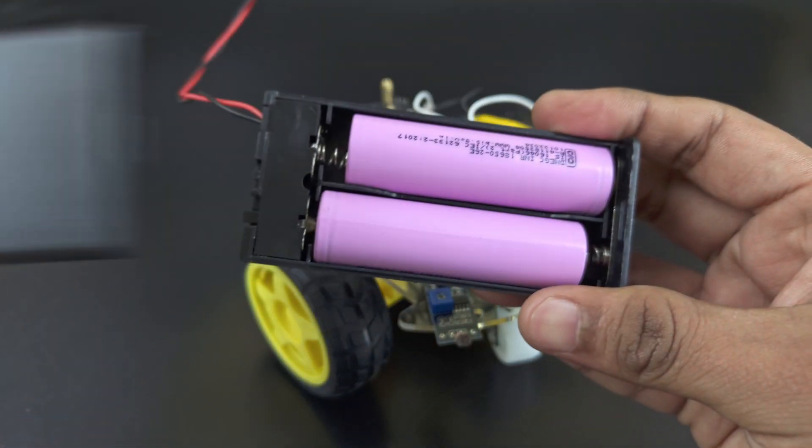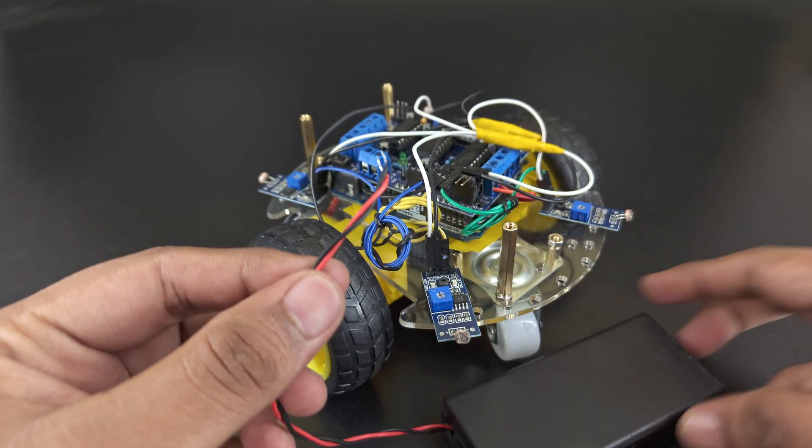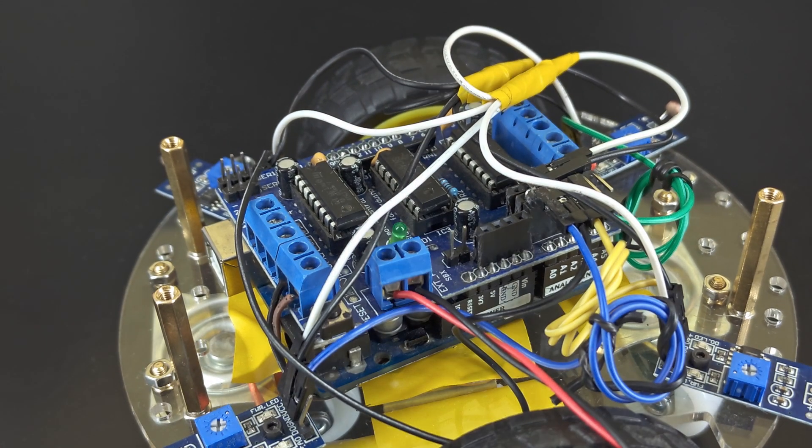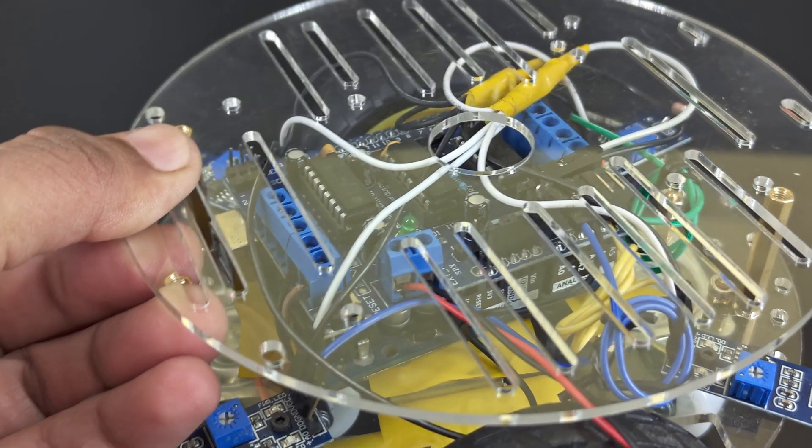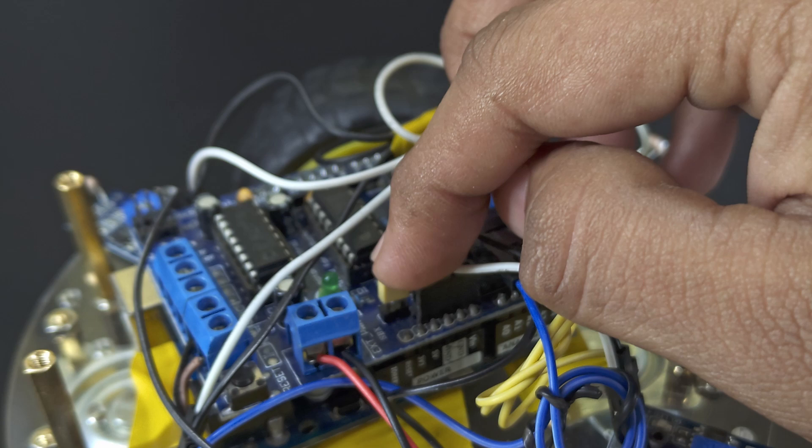Next, connect our battery. When using external power supply, put the power jumper pin in.